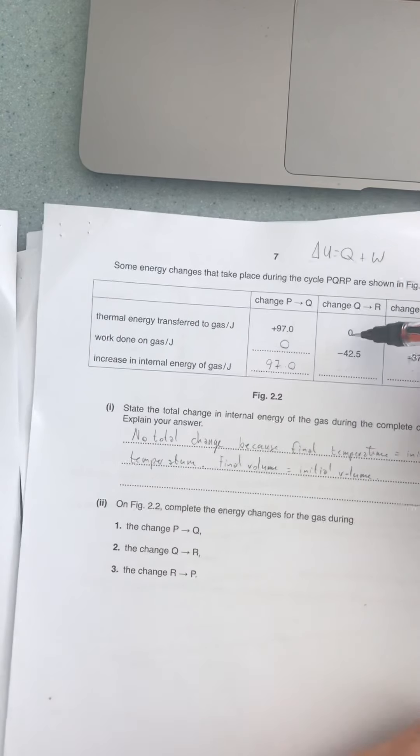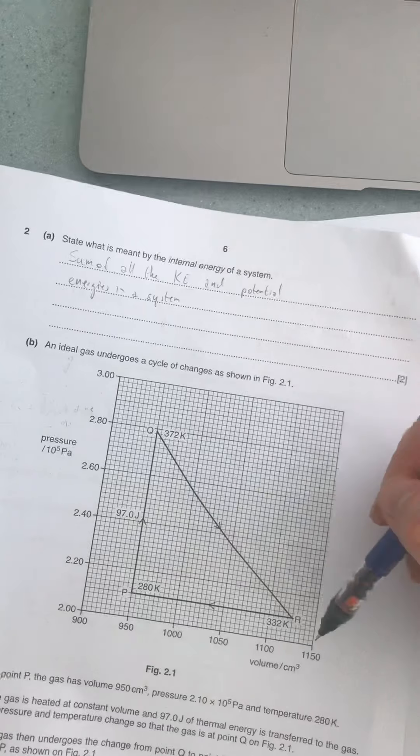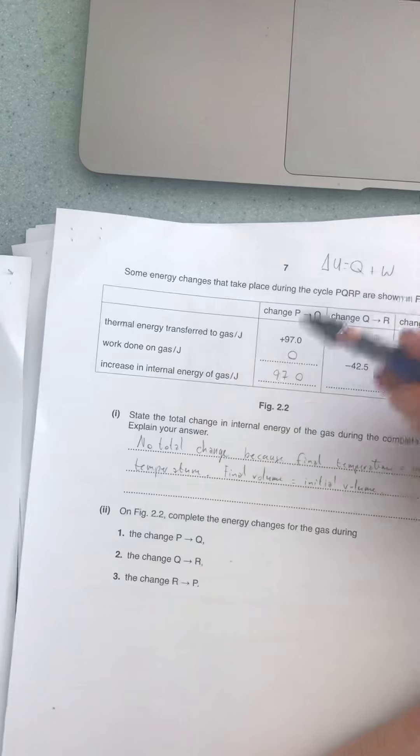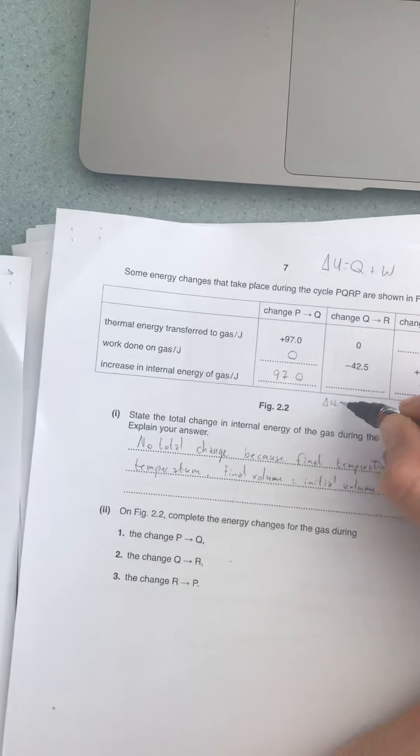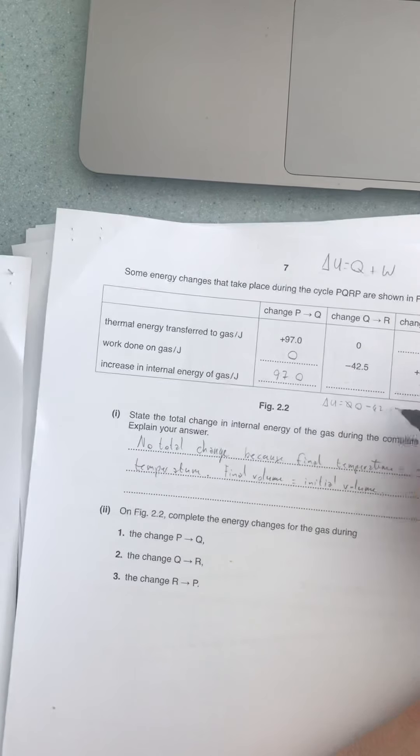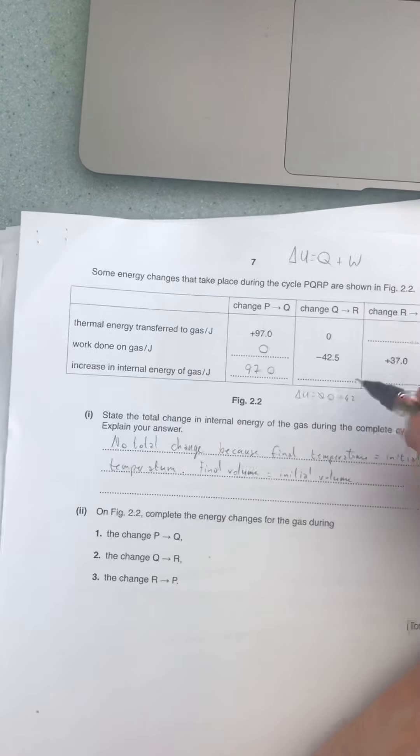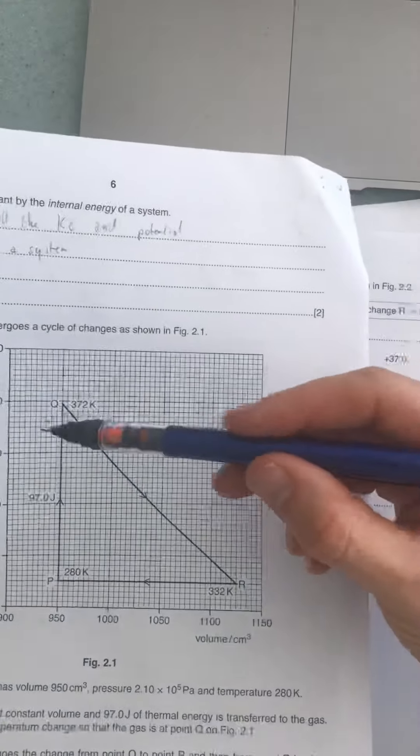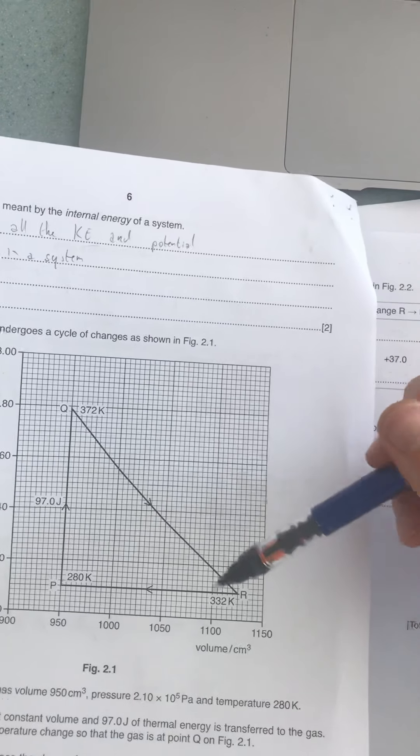Now we see something else. We see the thermal energy transferred to the gas is zero. So we're going from Q to R. That means our change in internal energy, delta U, is equal to Q—our thermal energy which is zero—plus negative 42.5. So that means we've lost internal energy. You can think about this being work done by the system, and the work is done by the system because it expands, it's doing work against the atmosphere, it's expanding outwards. So here we have negative 42.5.